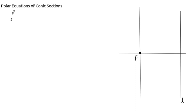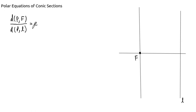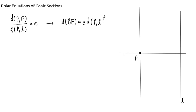A conic section can be described by the equation: the distance between any point on the conic section and the focus, divided by the distance between any point on the conic section and the directrix, is a constant ratio. This constant E is called eccentricity. We can use this idea to rearrange and solve an equation. We have D of PF, the distance between the point on the conic section and the focus, is equal to E times the distance between the point and the directrix.